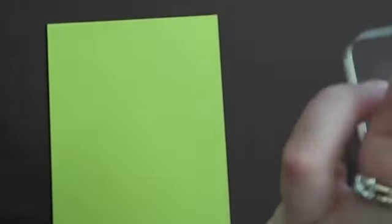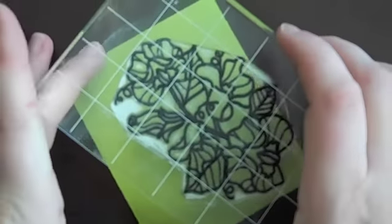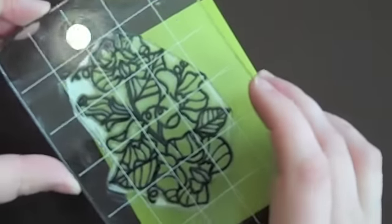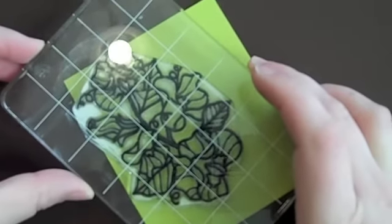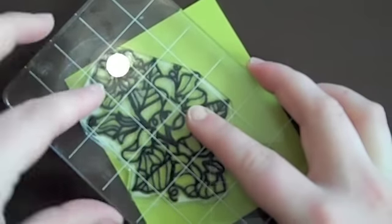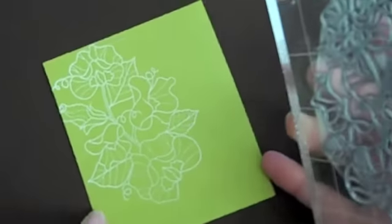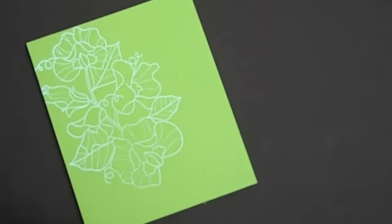First, I am using Year of Flowers Sweet Peas. I've inked it up with Fresh Snow ink and I've got a block of Simply Chartreuse cardstock that I'm stamping onto. Love that image.